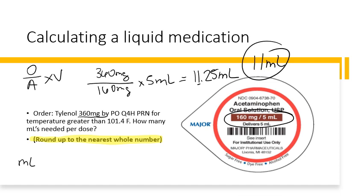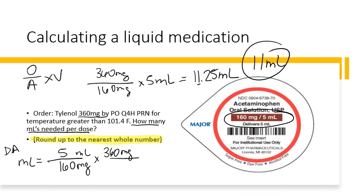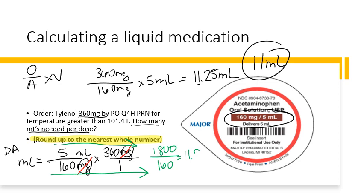For those who prefer dimensional analysis, we're solving for mL. We have 5 mL over 160 milligrams, and we need to give 360 milligrams — place a 1 to hold the value. Cancel the like units, multiply the top across to get 1800, and the bottom to get 160. Dividing 1800 by 160 gives 11.25 mL. Remember, we round to the nearest whole number, so the answer is 11 mL.